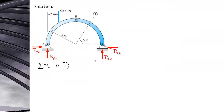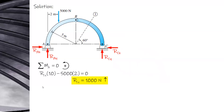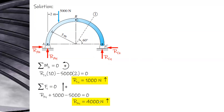From summation of moments at A, you can get RCY. From summation of forces along Y, you can get RAY. After that, cut a section at B and analyze either the left or right side.